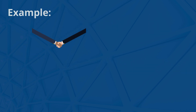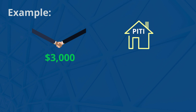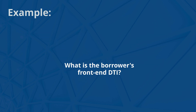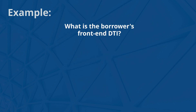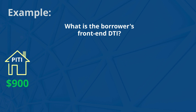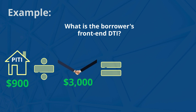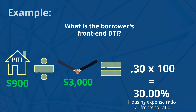Let's do an example. A borrower's monthly qualifying income is $3,000. The proposed loan PITI payment is $900. What is the borrower's front-end DTI? Let's take the $900 and divide it by the $3,000, and we get 0.30. Times that by 100, and we get 30% — the housing expense ratio or front-end debt ratio.